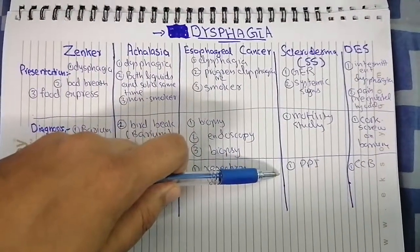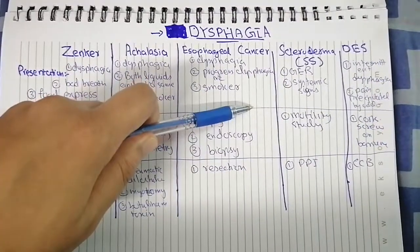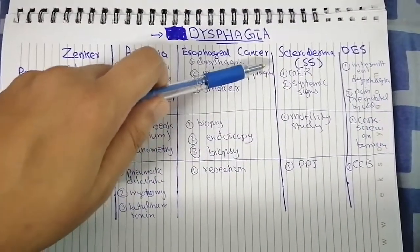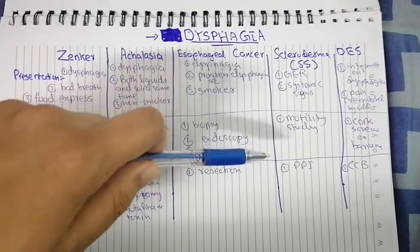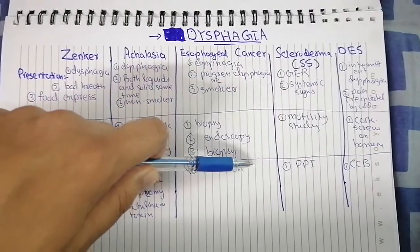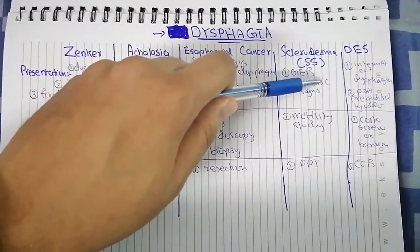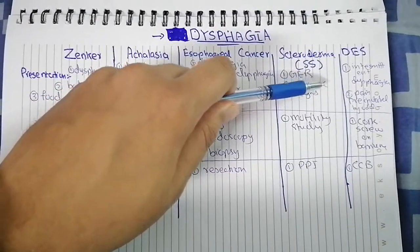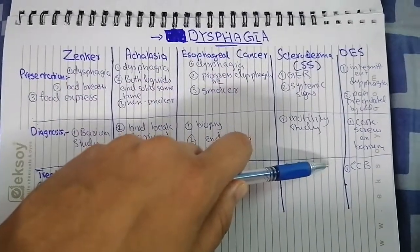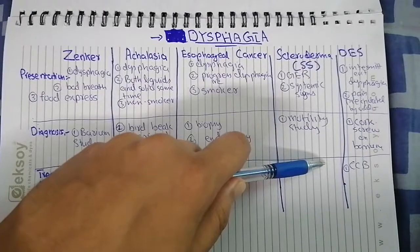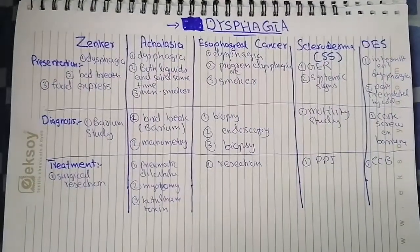For scleroderma, treatment mostly depends on its presentation and problems. If the patient presents with GERD symptoms, you should give a PPI. For diffuse esophageal spasms, there is spasm of the esophageal muscle, so we give a relaxant — specifically calcium channel blockers.